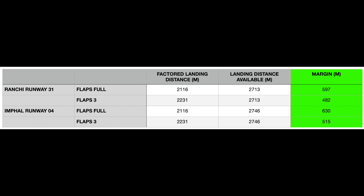At Imphal, landing with flaps full leaves 630 meters of the runway unused, and landing with flaps 3 leaves 515 meters unused. It is very clear from these calculations that flaps full consumes 115 meters less of the runway, while flaps 3 will make you run 115 meters more — but as you can see, in both cases there is more than sufficient runway remaining. The same calculations for a wet runway also show sufficient available runway in both cases.